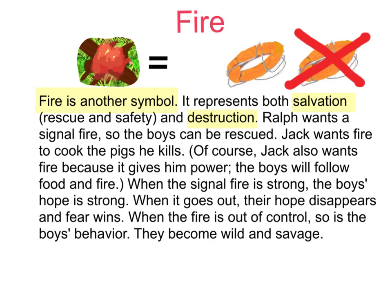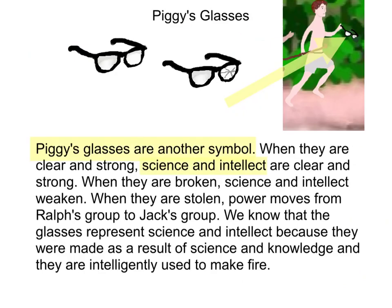Fire is another symbol representing both salvation — rescue and safety — and destruction. Ralph wants a signal fire so the boys can be rescued; Jack wants fire to cook the pigs he kills, and also because fire gives him power. When the signal fire is strong, the boys' hope is strong; when it goes out, their hope disappears and fear wins. When the fire is out of control, so is the boys' behavior — they become wild and savage.